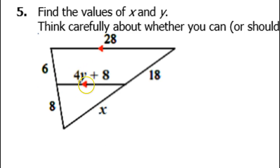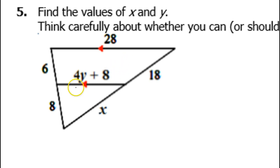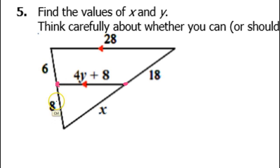Every time you see a problem where you have a segment inside the triangle that's parallel to a side, you have to stop and ask yourself: should I be doing the mid-segment theorem, or will I simply do the side-splitter theorem? The key question is: are these midpoints? Here the answer is no, because we have a 6 and an 8. If this were a midpoint, it would be 6 and 6, or 8 and 8. So we cannot do the mid-segment theorem.